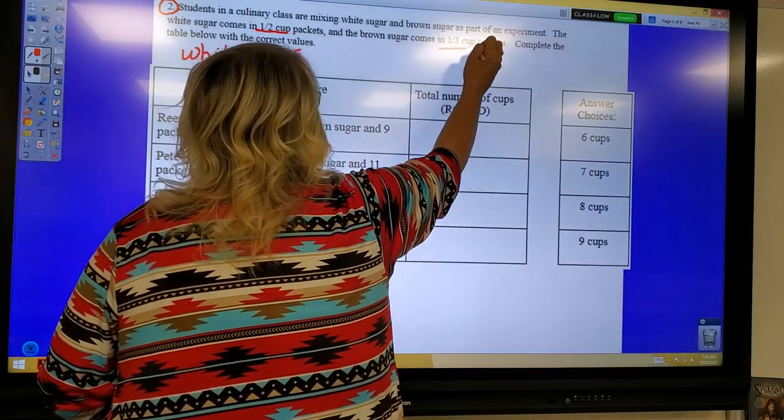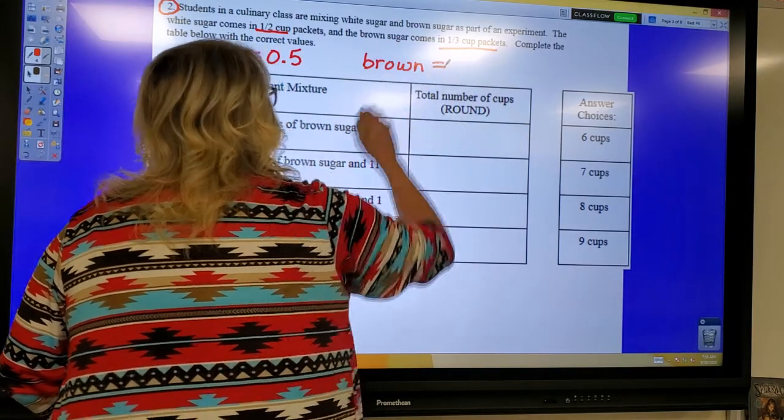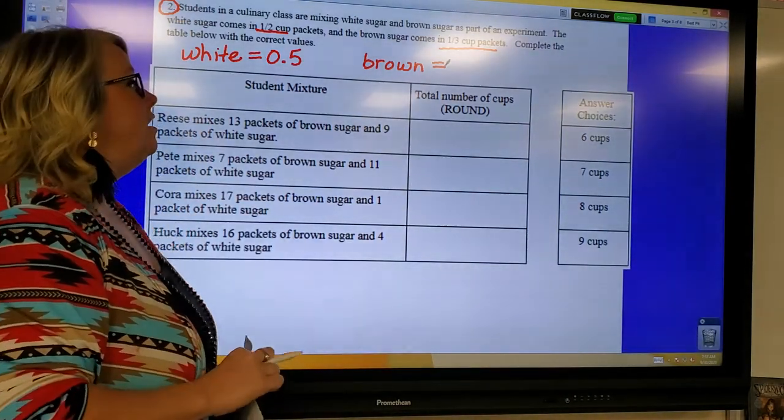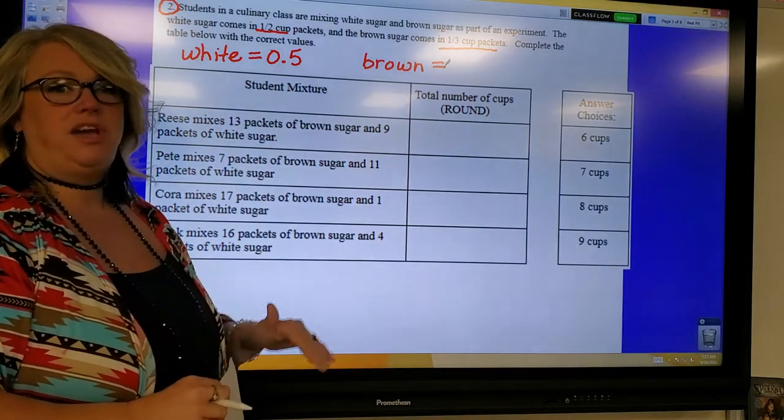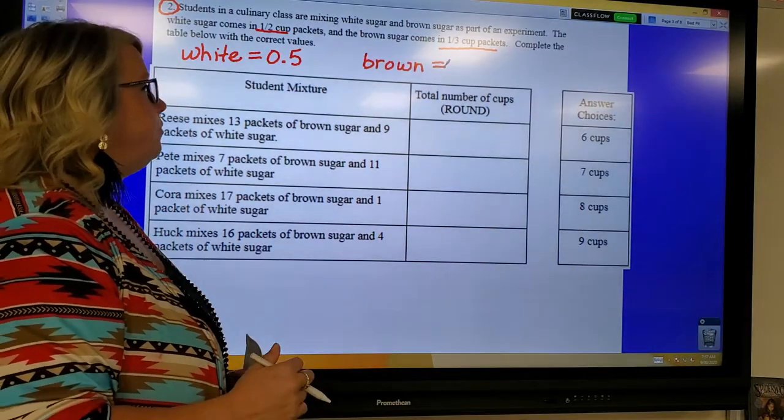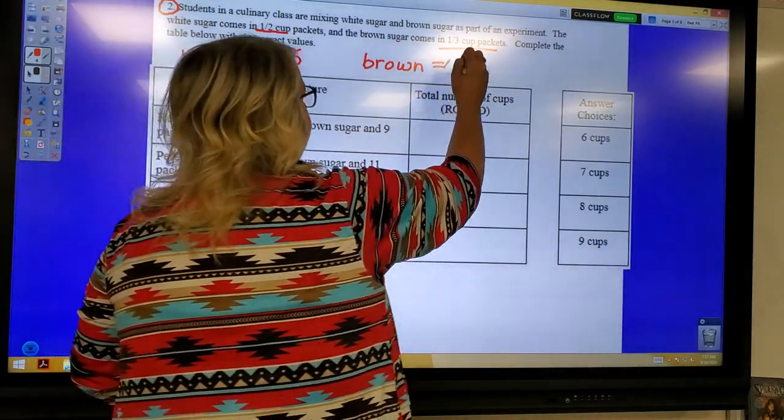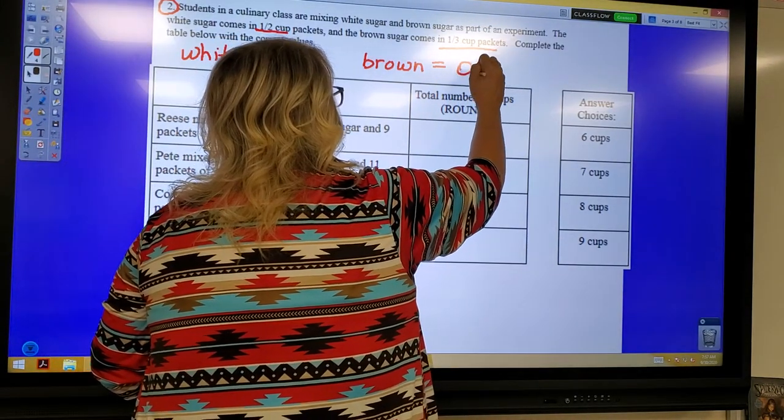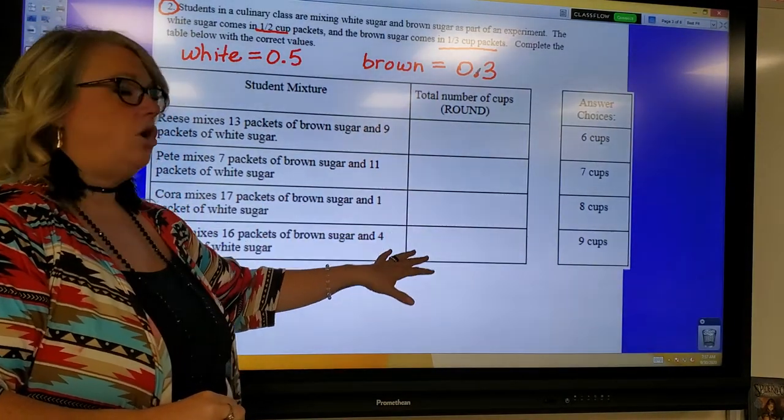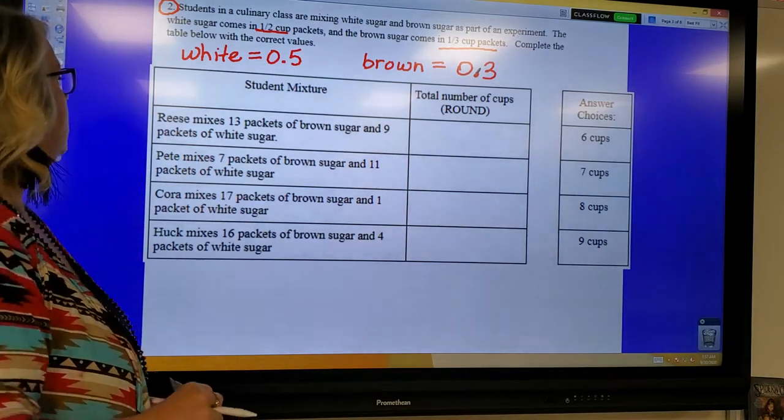And it says that brown sugar is one-third. Now one-third is not a fraction that's easy to write as a decimal. Because if you do one divided by three, you get 0.333333333. It's a repeating decimal. So since we are going to be rounding, I'm going to know that if I just use 0.3, my answer is going to be a little off. But I'm going to go ahead and figure out what all the answers are, and then I should be able to match them up with my answer choices.